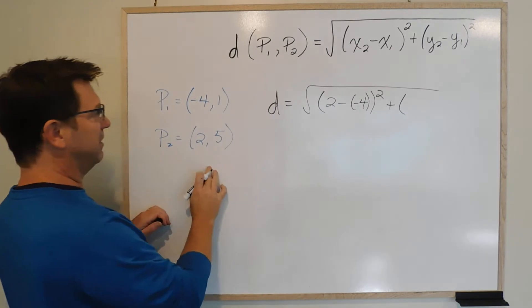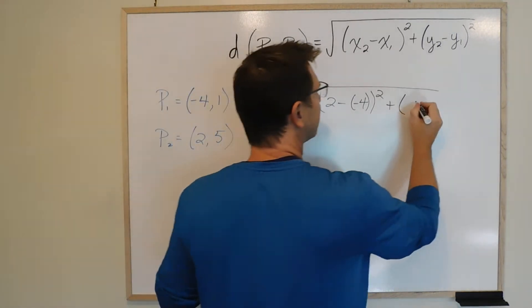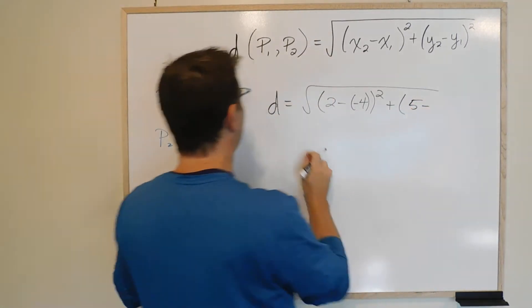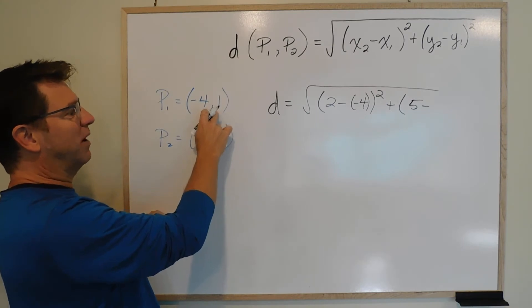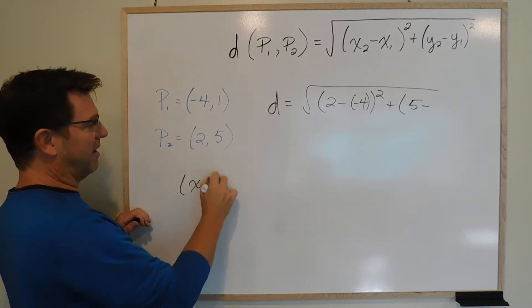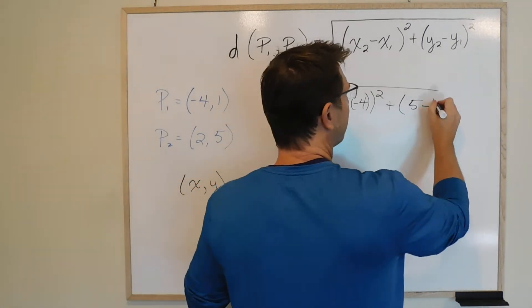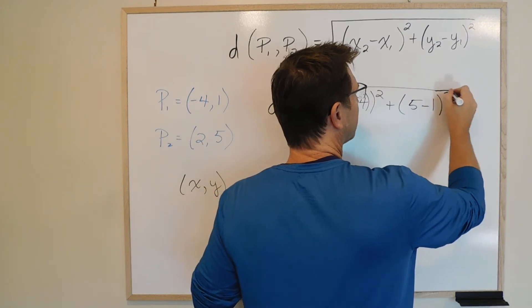Plus y2 is 5, minus y1, y1 is 1, remember points always go x, y. So it's 1, and that is squared as well, squared is a little short.